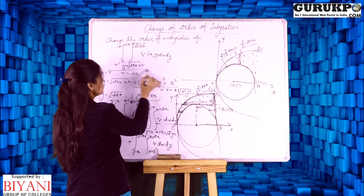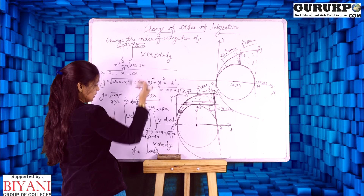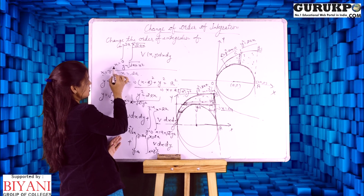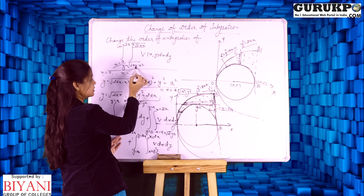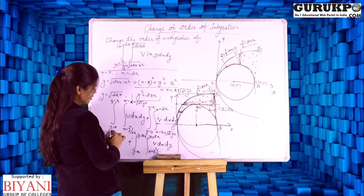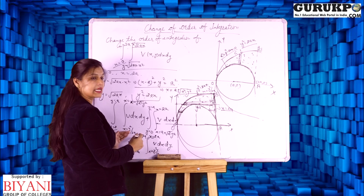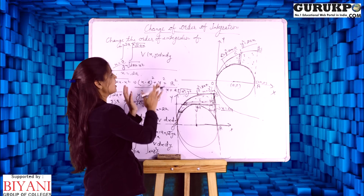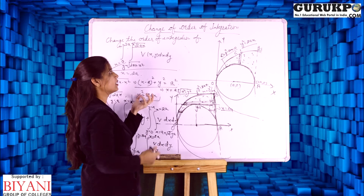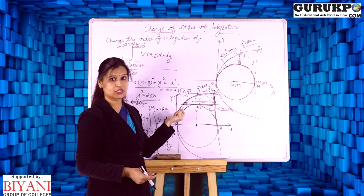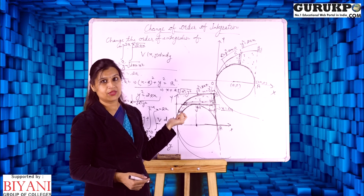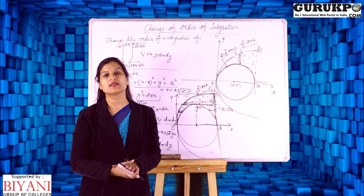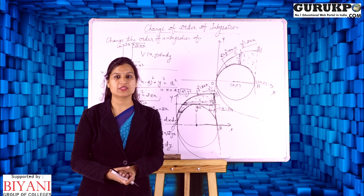So we have changed the order of integration. In the original form, the first limits were of x and the second of y; now the first limits are of y and the second are of x. I hope that with the help of this example you can understand how to change the order of integration in double integration. If you like this video, please like, share, and subscribe to our channel.